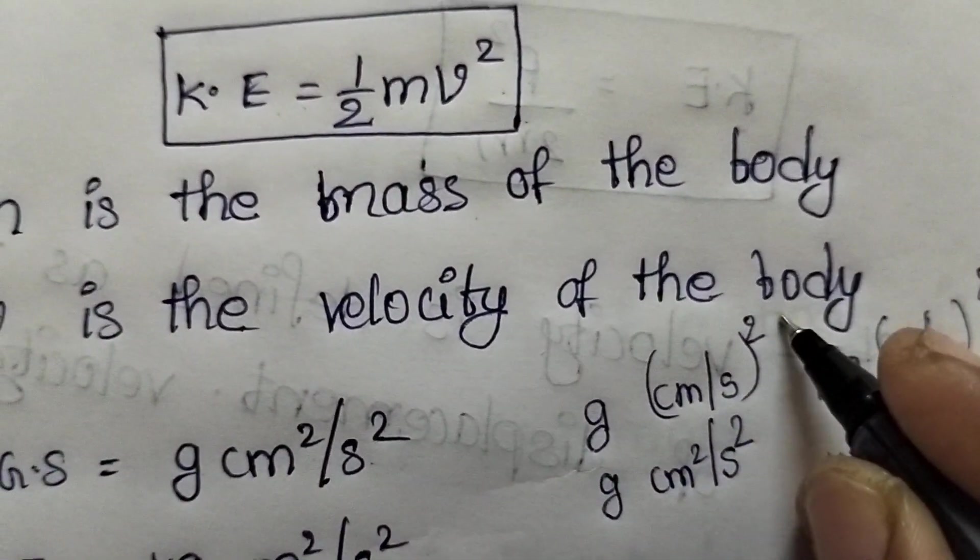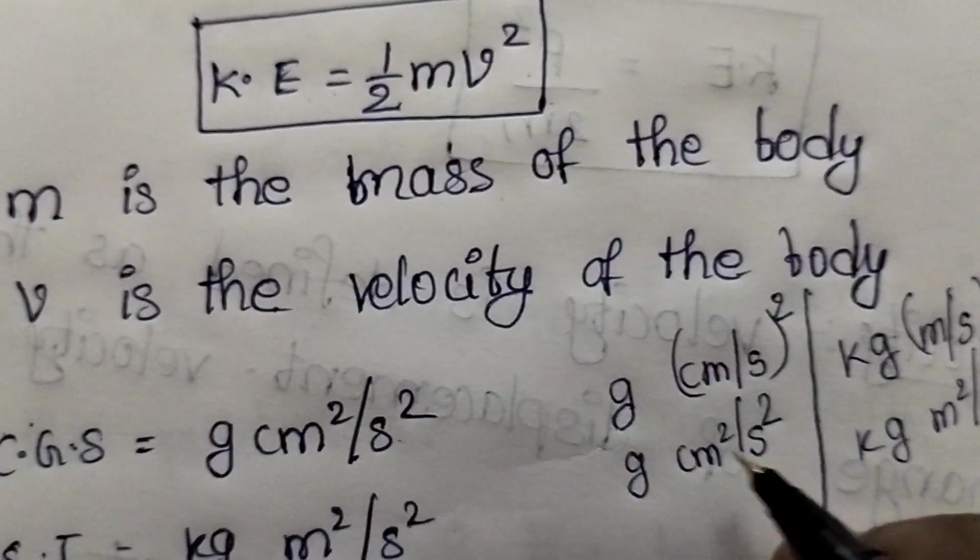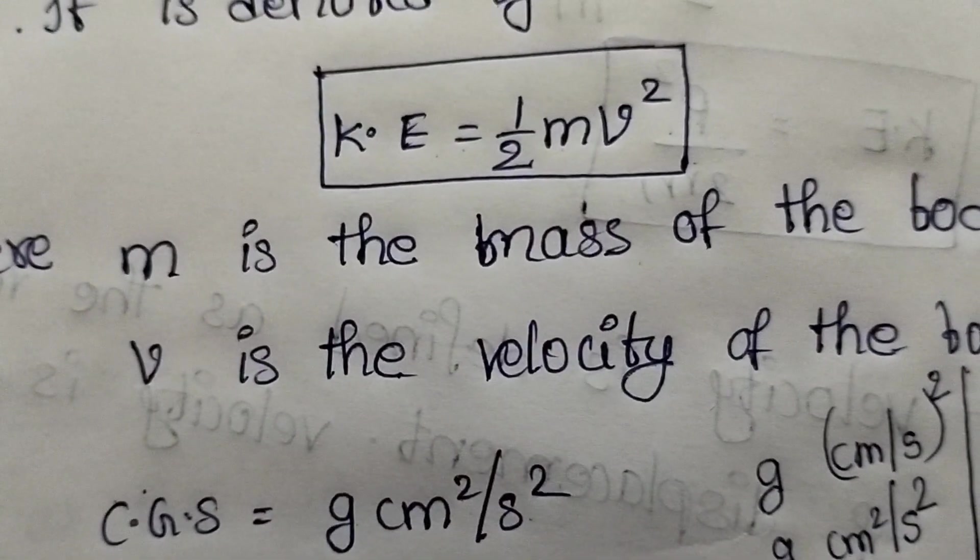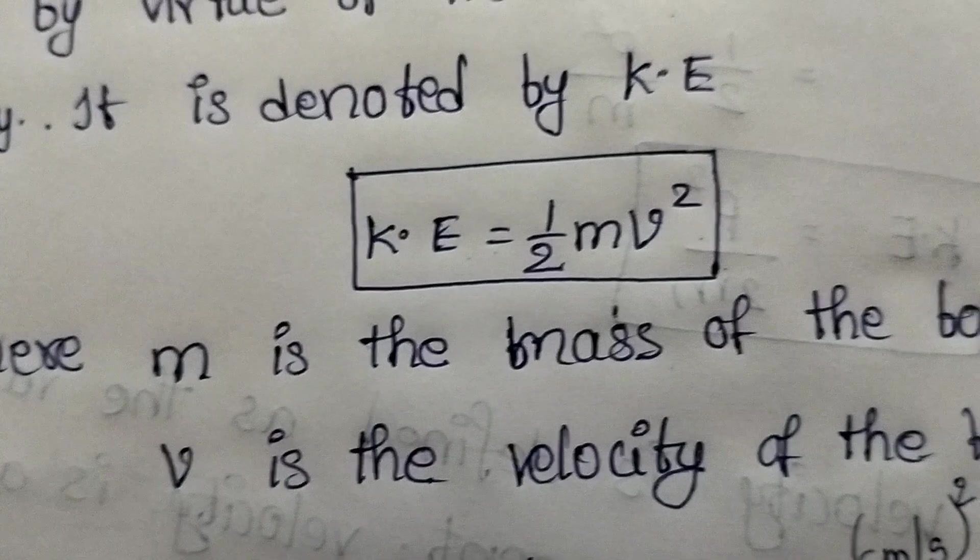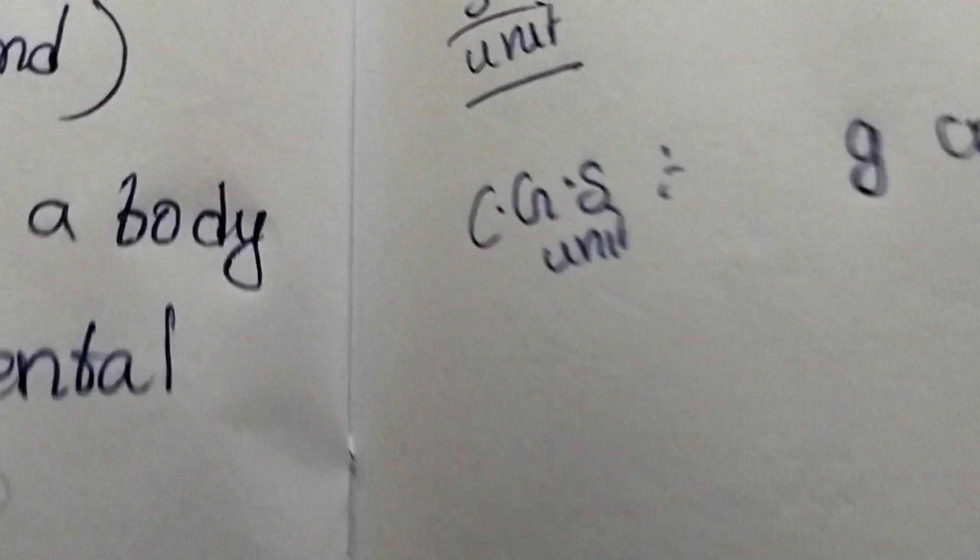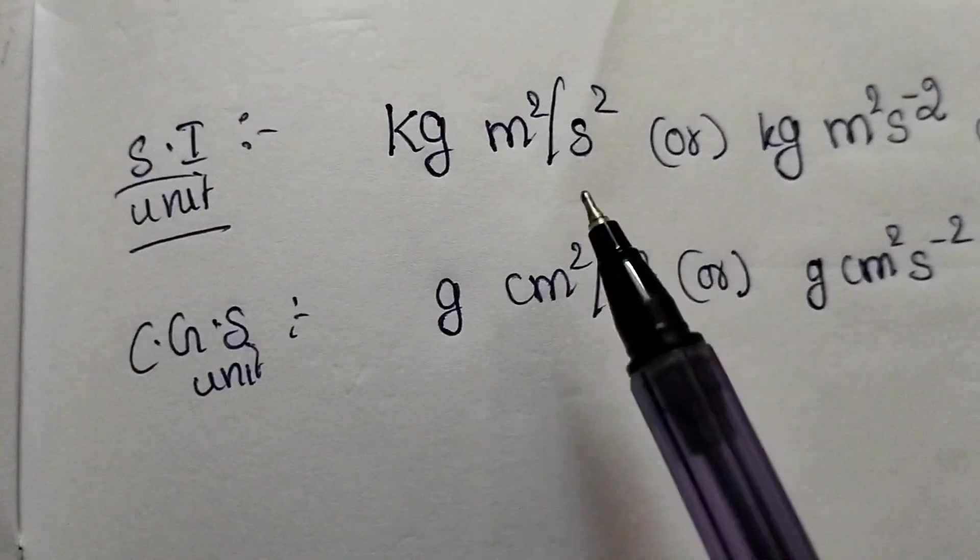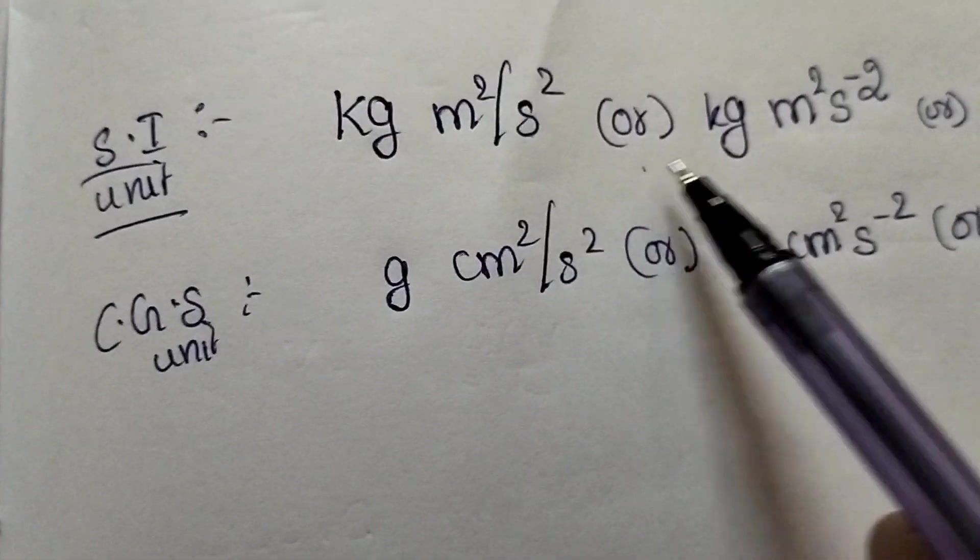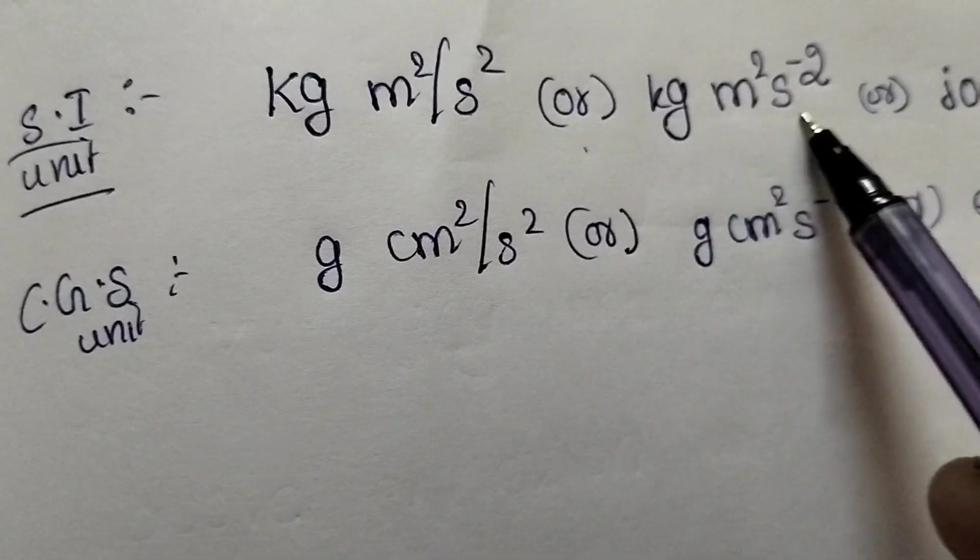This is the CGS system units and this is the SI system units. I hope you like this video regarding the kinetic energy. See some more units of SI and CGS. In SI system, it is measured in kg meter square by second square, or it can be written as kg meter square S to the minus 2.